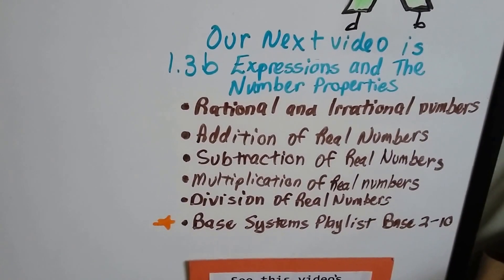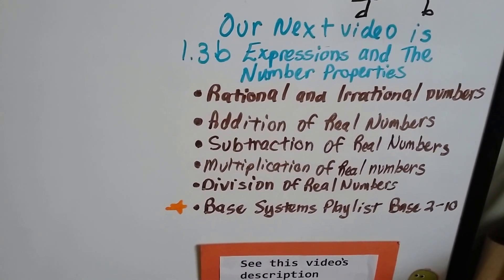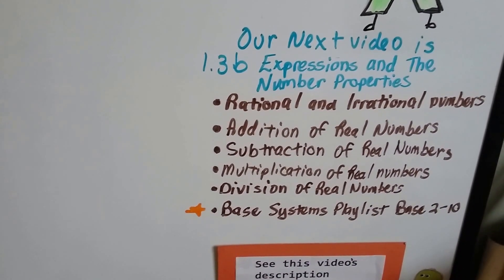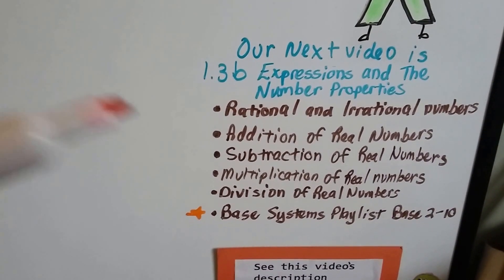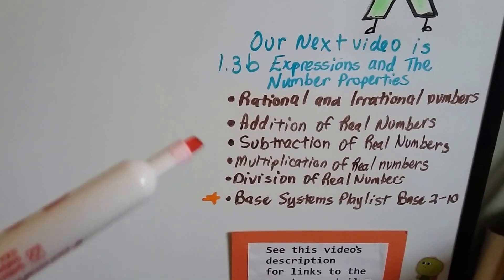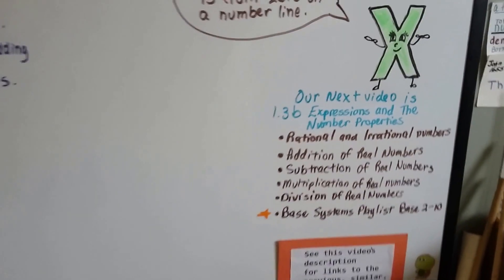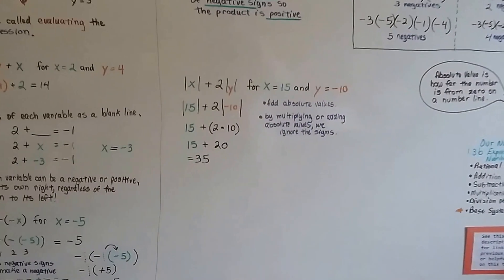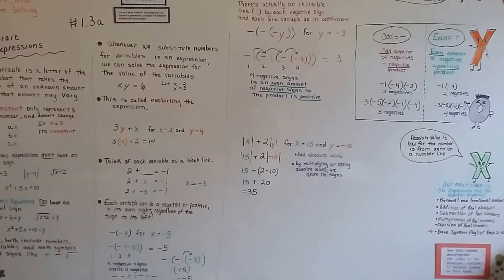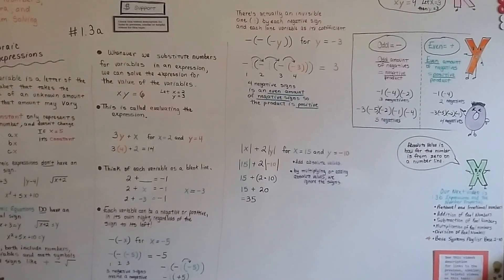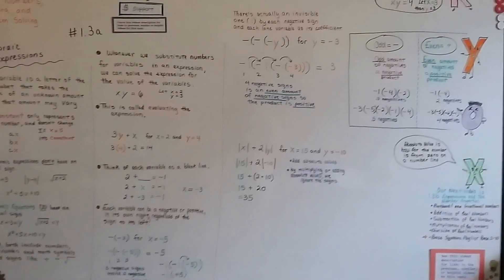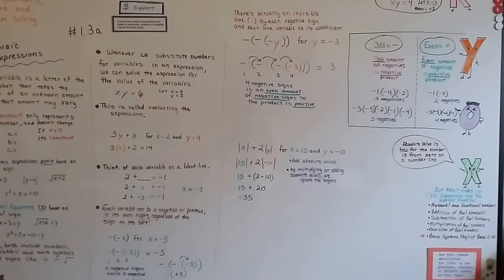Our next video is going to be 1.3b, where we'll talk about expressions and the number properties — like the commutative property, associative property, identity property, and multiplicative property. If you want to check out any previous videos for chapter 1, just go to the description — they're one click away. Each one of my videos uses information from the previous video, so if you missed one you might get confused in the next one. This is an entire algebra course, and all the videos are in order.